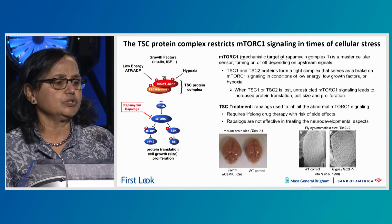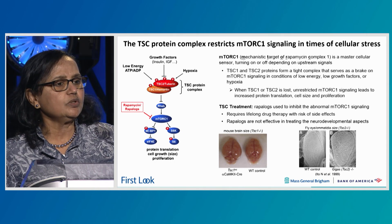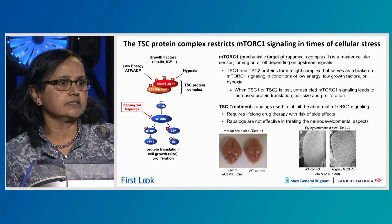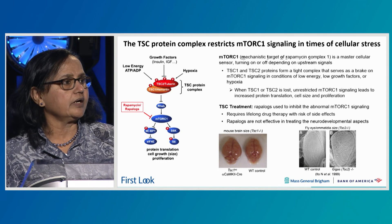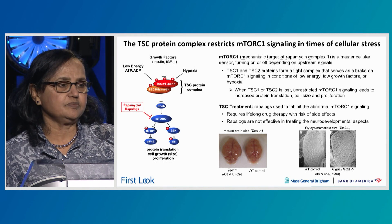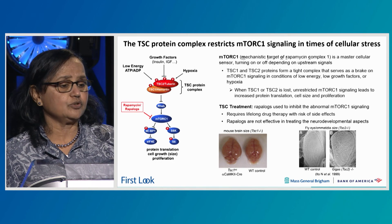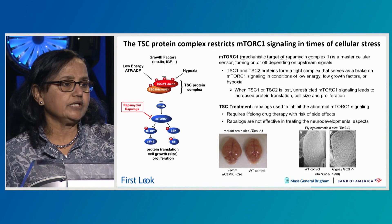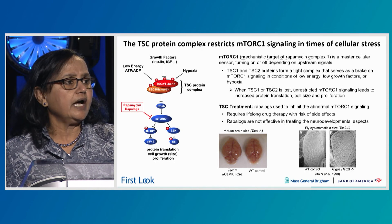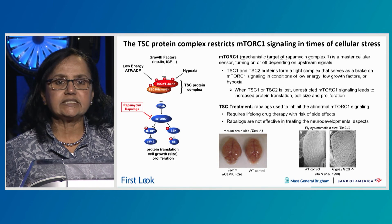So what do these proteins do? TSC1 and TSC2 function together as partners, as a complex, to control a major signaling pathway called mTORC1 — which stands for mechanistic target of rapamycin complex — a master cellular sensor that turns on or off depending on upstream signals. TSC1 and TSC2 as a complex serve as a brake on mTORC1 signaling in conditions of low energy, growth factors, hypoxia, et cetera. When either TSC1 or TSC2 is lost, unrestricted mTORC1 signaling leads to increased protein translation, cell size, and proliferation.